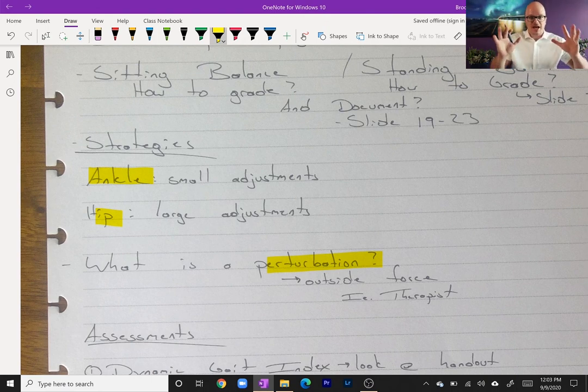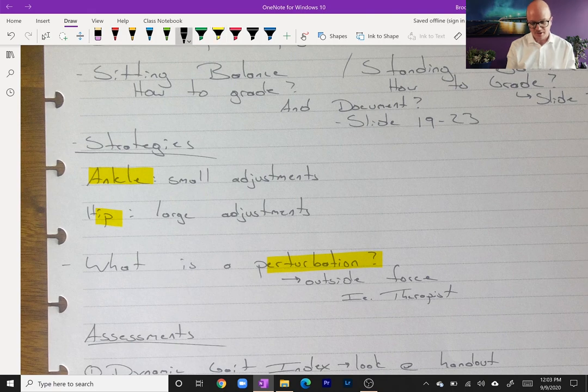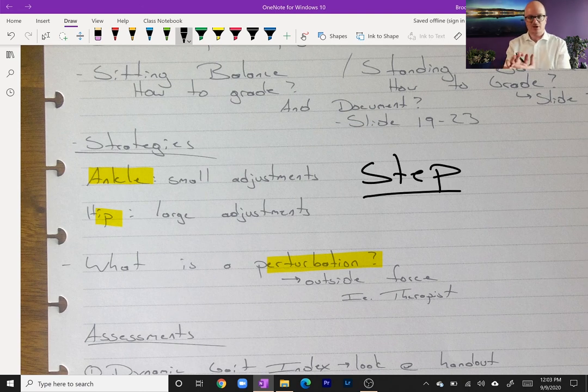And then the hip. So we have the ankle, then we have the hip—large adjustments. If you push me from behind slightly, my ankles are correct. You push me hard, my hip's going to flex and my hip's going to have to try to save me, right? Hip is going to be for large adjustments. And then the one that's not on here and often overlooked is the step strategy.